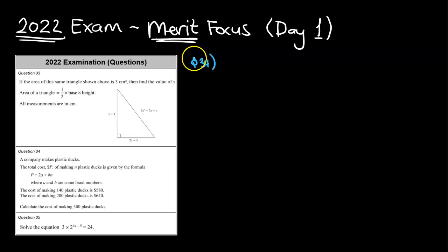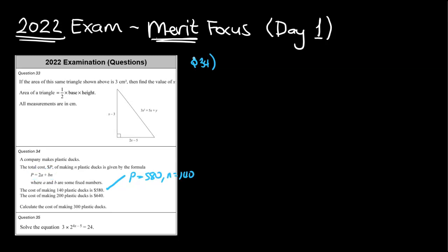We are now on to question 34. A company makes plastic ducks. The total cost can be represented by the equation here, and n is the number of ducks they're trying to figure out. a and b are some fixed numbers, so that's probably what we're going to need to calculate before we can do anything. They've given us two scenarios here, so it looks like it's probably going to be simultaneous equations because we've got two different scenarios, and we need to figure out the cost of finding 300 ducks.